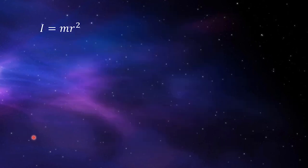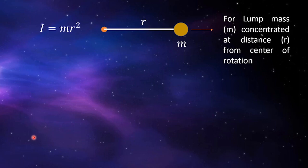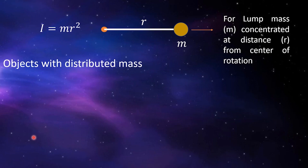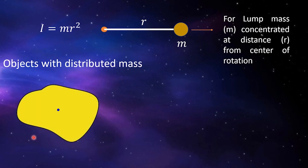The problem with the formula mr² is that it is intended only for masses concentrated at a certain distance r. But in real life, 99% of the objects we encounter have distributed mass — meaning the mass is not concentrated in a single point. Examples include your body and basically anything you see. So how do we find the moment of inertia for objects with distributed mass?